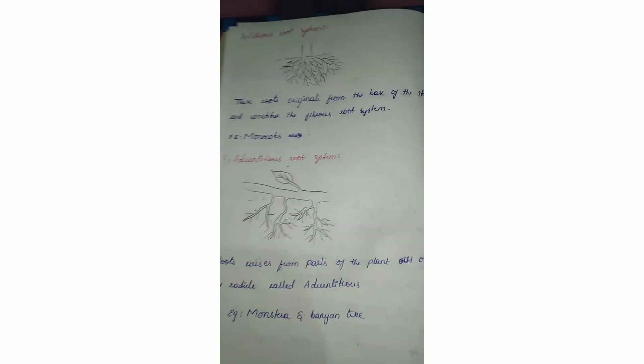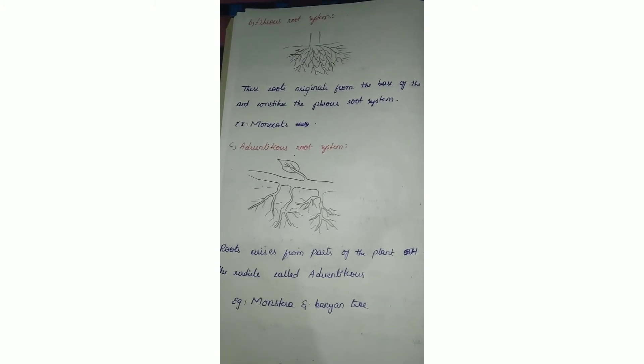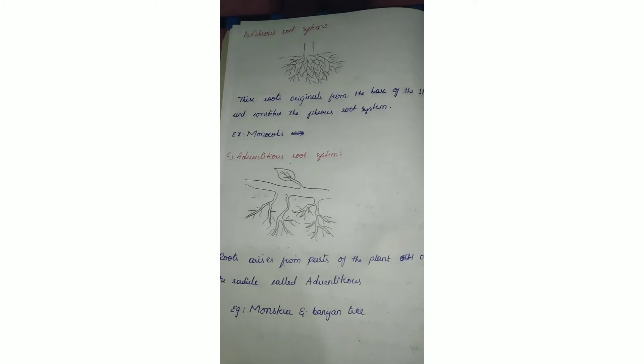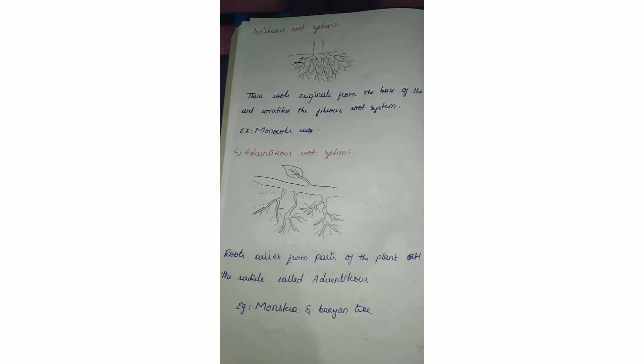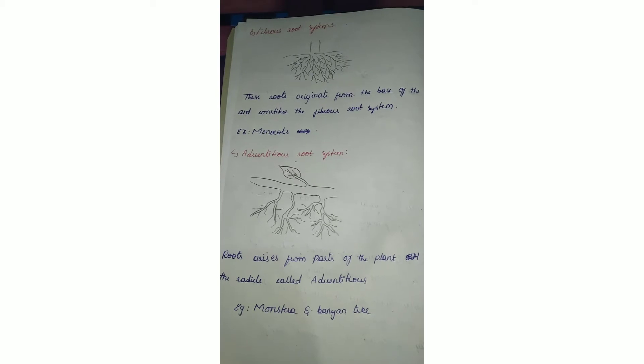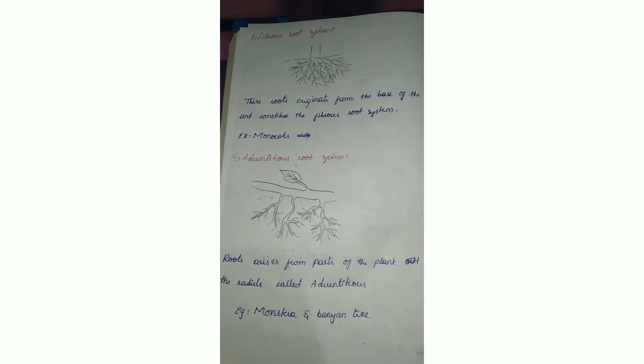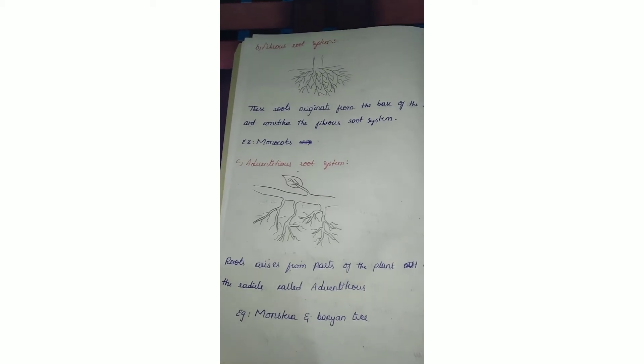Examples are Monstera and Banyan tree. You have seen the Banyan tree, called Marikettu, where such type of roots all originate from the branches of the tree.